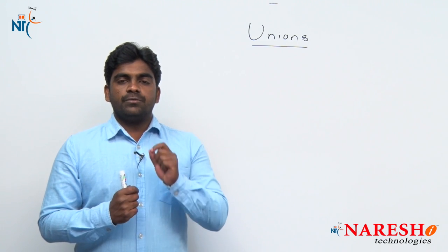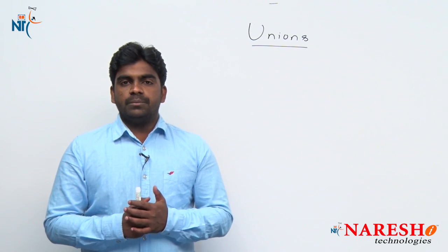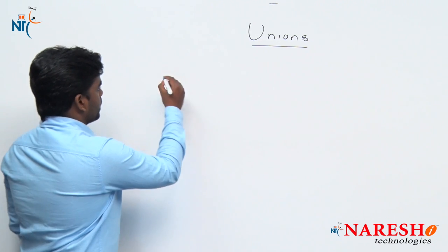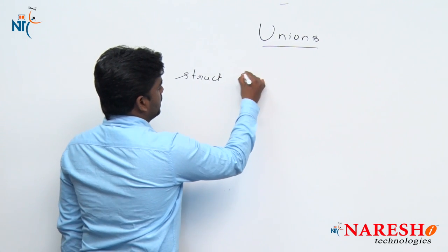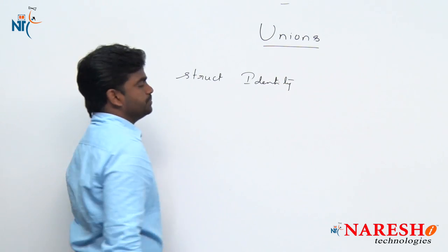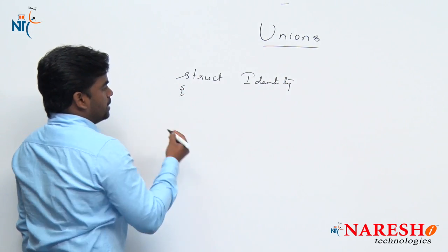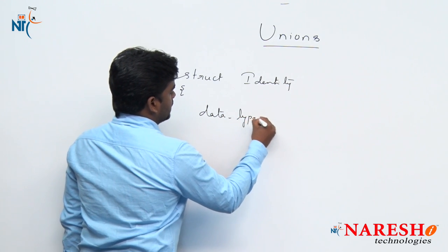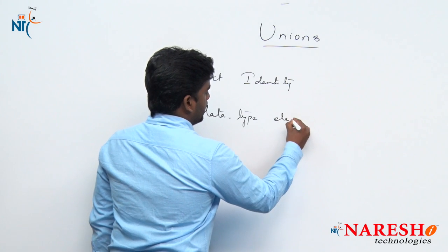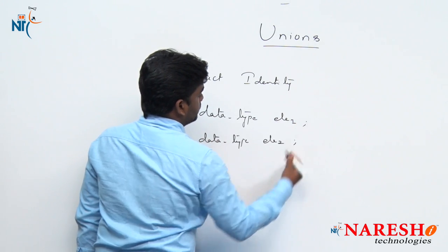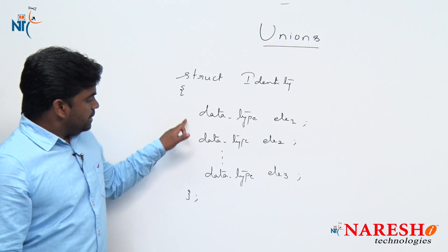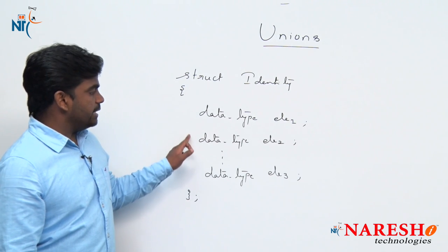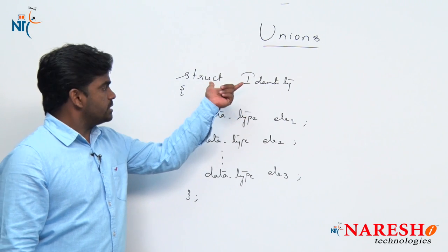What is a structure? We can create one user-defined data type by which we can store N number of elements of different data types. How we are creating a structure: the keyword is struct and here we are using an identity — for every structure, identity is important. Inside we are creating N number of elements of different data types: data type element 1, data type element 2, data type element 3, and so on. N number of elements we can declare of different data types using a single variable, and of course it works like a data type.